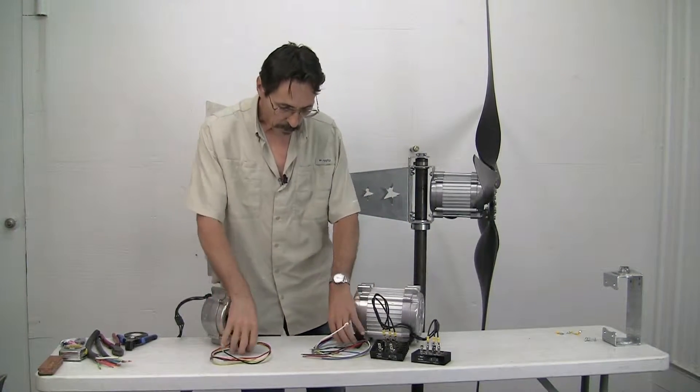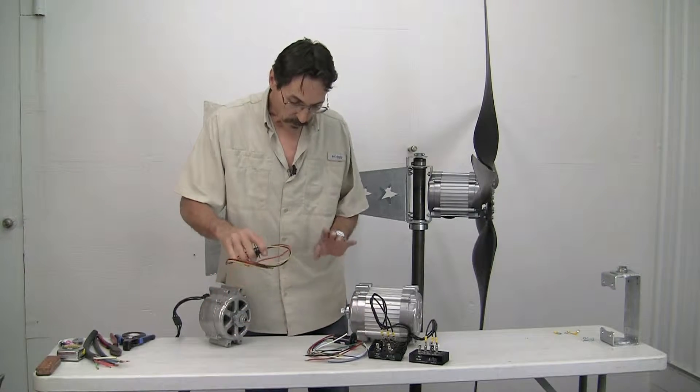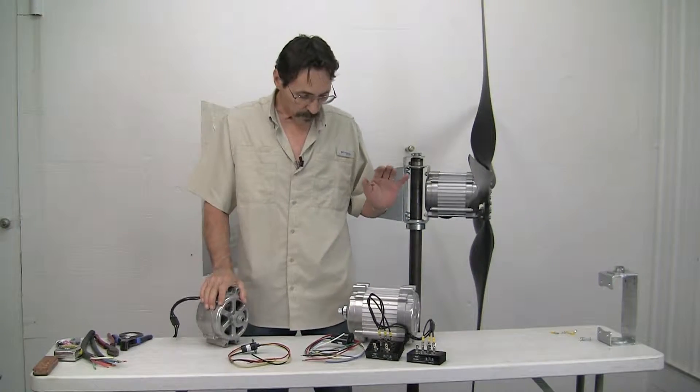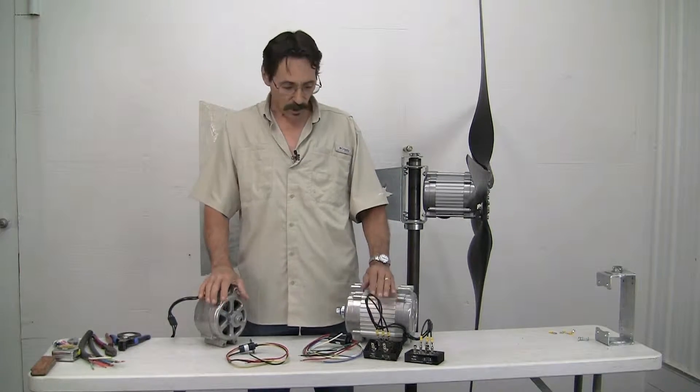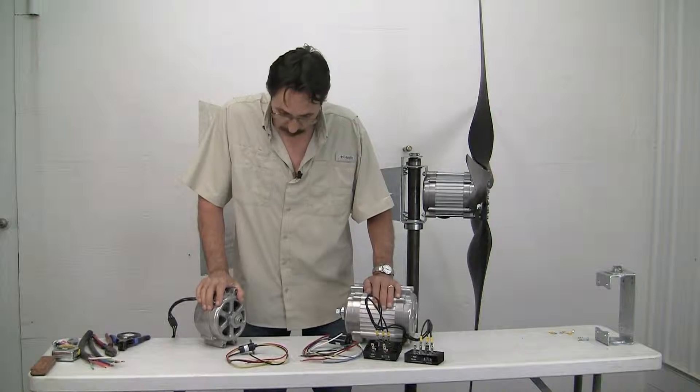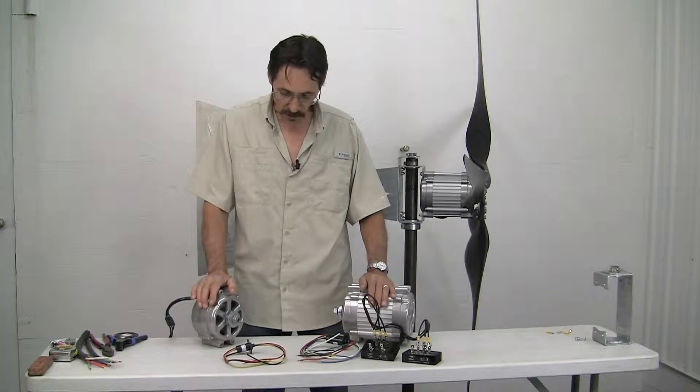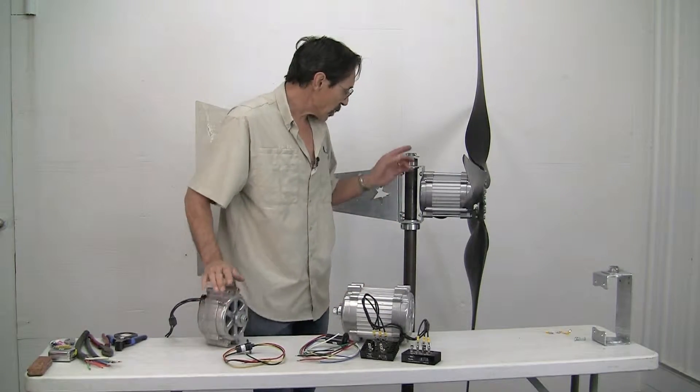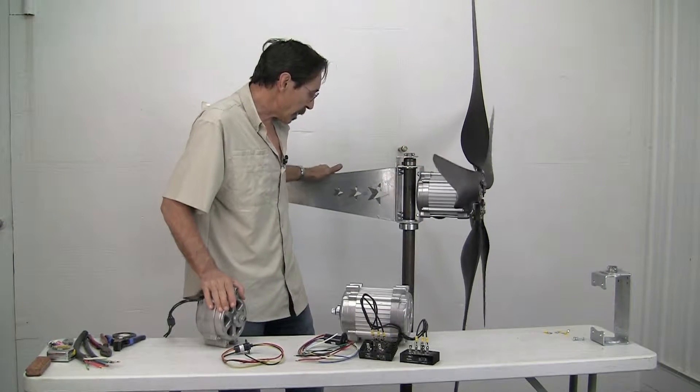Today I want to show you how to hook up a slip ring, for those of you who do not know how to do that, to our Freedom Single PMG Permanent Magnet Generator or Freedom 2 Permanent Magnet Generator, or to any PMA or PMG that's out there. I'm going to show you how to do the dual PMG and how to install the slip ring into our wind turbine mount.